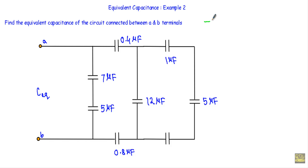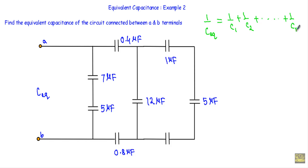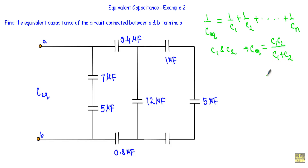When we have n capacitors connected in series, the equivalent capacitance is given by: 1/C_equivalent = 1/C1 + 1/C2 + ... + 1/Cn. When we have just two capacitors C1 and C2 in series, we calculate C_equivalent by multiplying them and dividing by their sum.